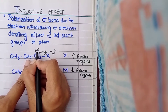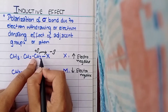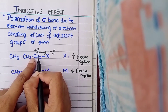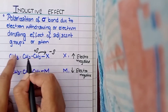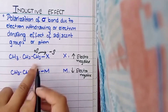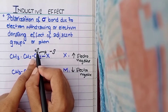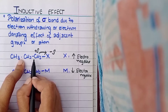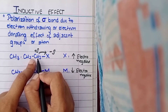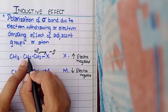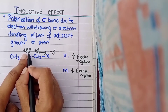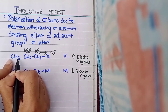The CH3 directly attached to X loses electrons, so it gets a partial positive charge — and since it has a direct effect, this partial positive charge is very high. The next CH3 is also affected indirectly, because the first CH3 became electron-deficient and pulls electrons from the second CH3. So this second CH3 also gets a partial positive charge, but a little less, represented by two partial positive signs.